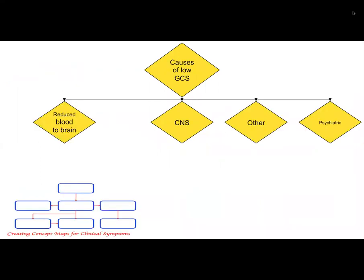Causes of low GCS can be broadly divided as reduced blood supply to the brain, CNS itself including increased intracranial pressure, and other causes that can affect cerebral metabolism and psychiatric causes.